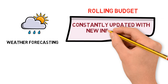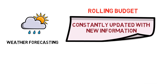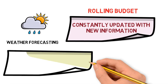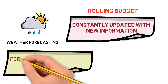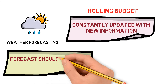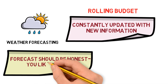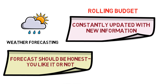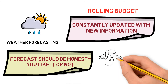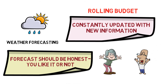One most important point which you must remember is that rolling budget is based on forecasting, and forecasting should be absolutely honest whether you like it or you don't like it. No manipulations should be made in the forecasted values, otherwise the rolling budget will not be useful.